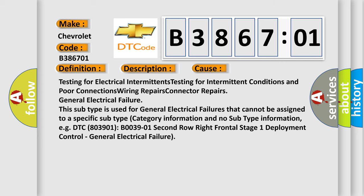Testing for electrical intermittents, testing for intermittent conditions and poor connections, wiring repairs, connector repairs, general electrical failure. This subtype is used for general electrical failures that cannot be assigned to a specific subtype category information.